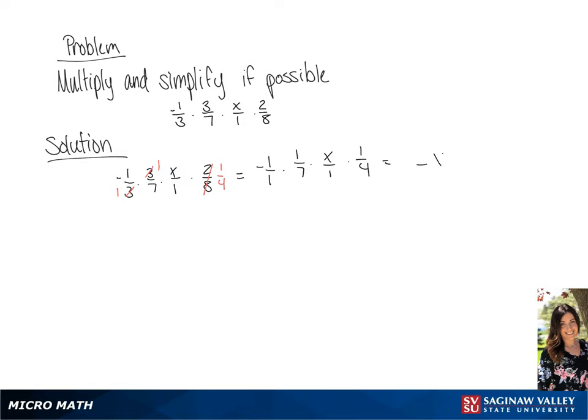And if we multiply across, we get an answer of negative x over 28.